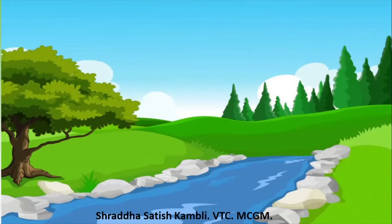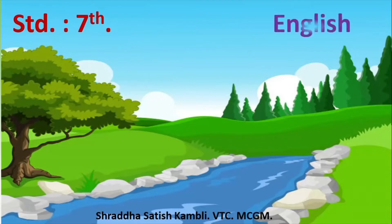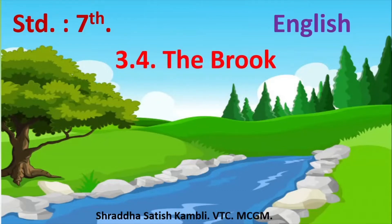This is a lesson in Standard 7th English. That natural thing we are going to learn about today is the brook. This is lesson number 3.4 from your English textbook. Now children, the brook means what? There is some water body which is flowing here, which could be the brook.